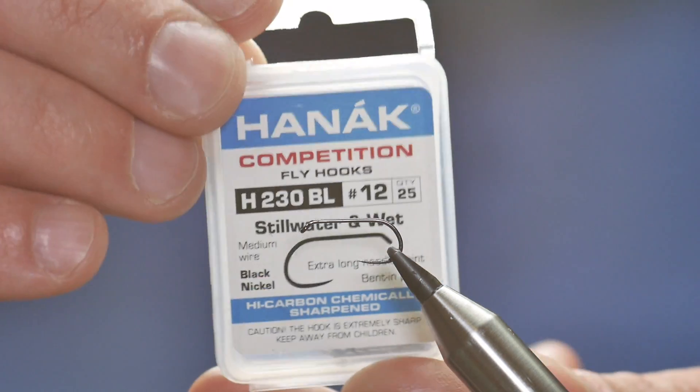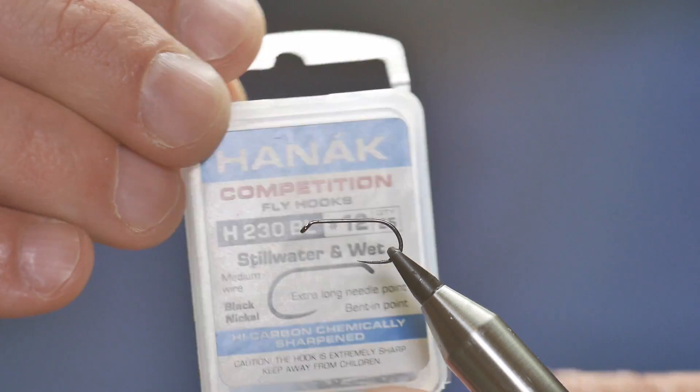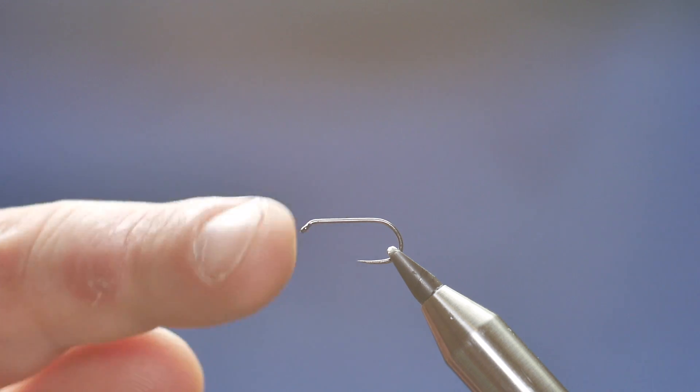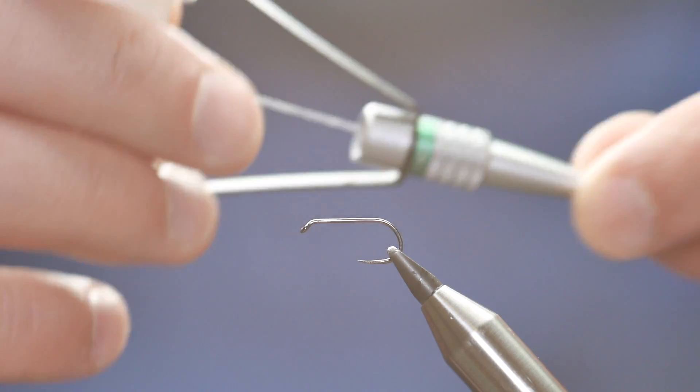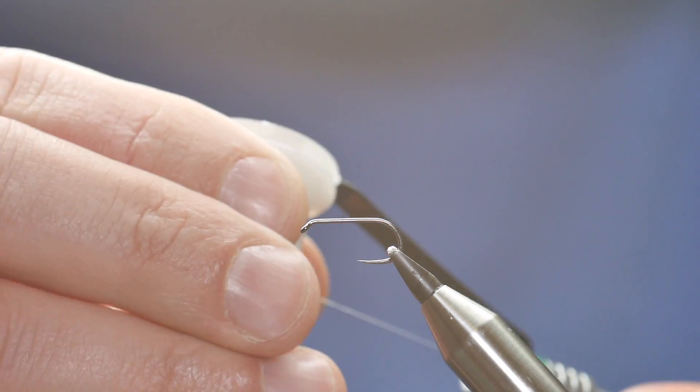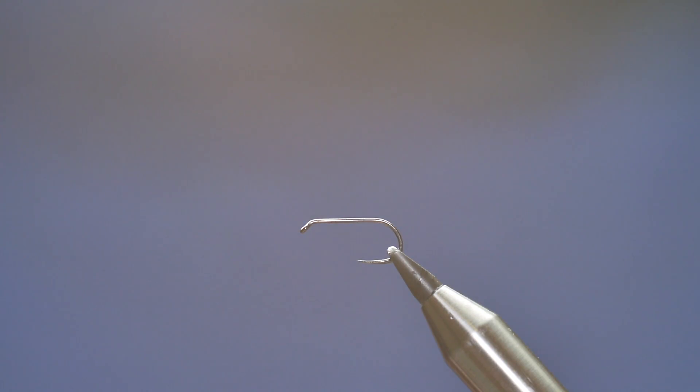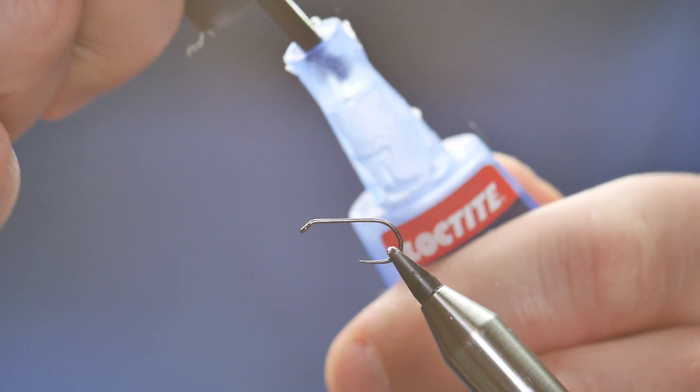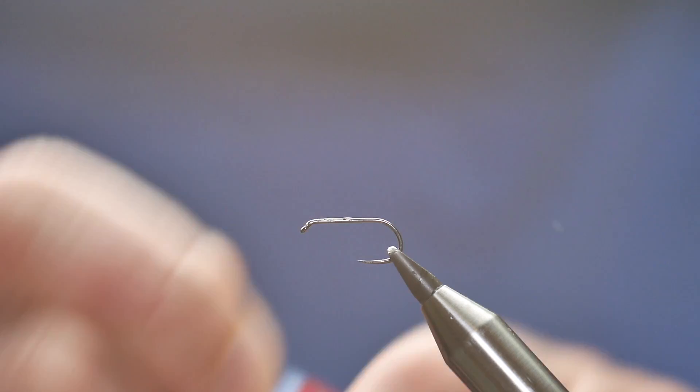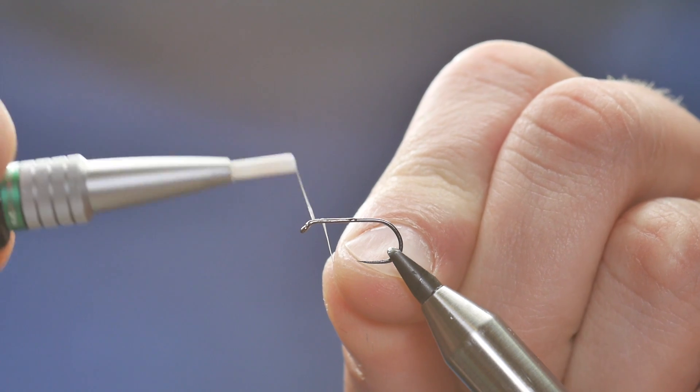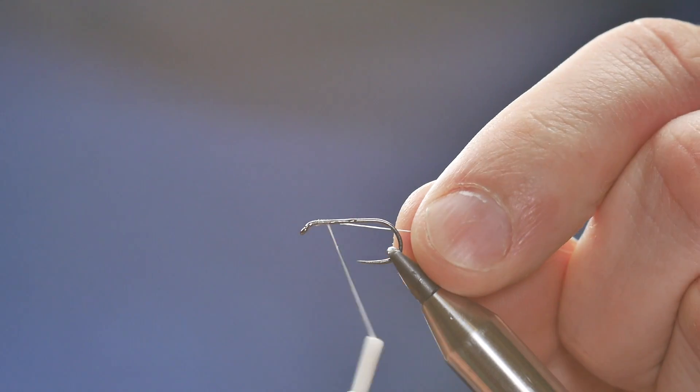In the vise is a Hanak Competition H230 barbless hook. Now obviously when this fly was originated everyone was using Kamasan's B175's and it would have been at a size 12, and the thread would have been different as well. But I'm going to use Vivas today, this is the GSP, it's in 50 denier and it's just a plain white thread. First thing I'm going to do is add a little bit of superglue to the shank of the hook just to stop body rotation. I'm going to start my turns just back from the eye.